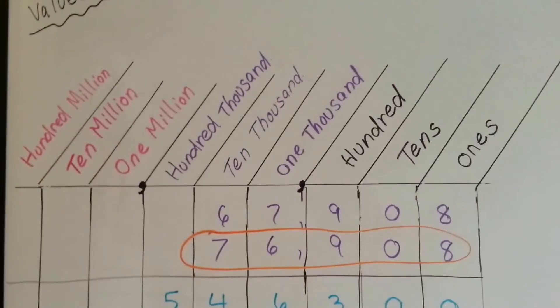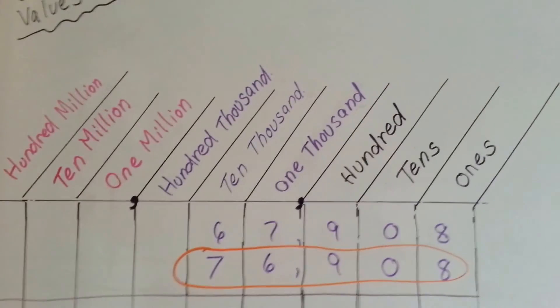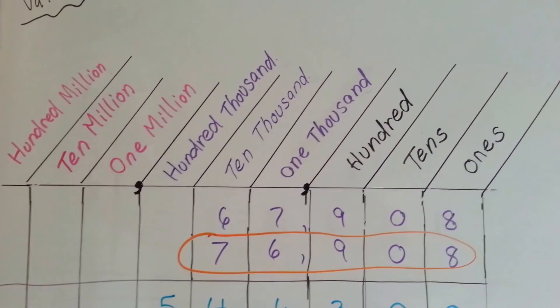Try making a table of place values for yourself. Try to find numbers around the house that you can fit in there to see their place value.